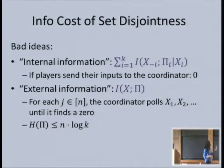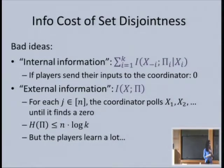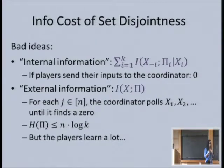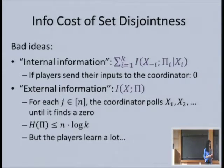The coordinator only gains at most n log k information about the inputs, so it won't give us a lower bound of Ω(NK). But notice that in this protocol, the players learn a lot. If I'm player k/2 and the coordinator contacted me for my input, I learned that everybody before me had ones—otherwise the coordinator wouldn't have gotten to me.